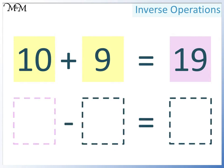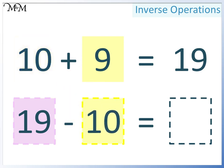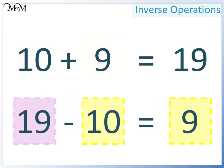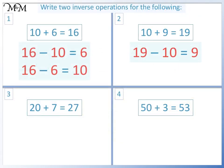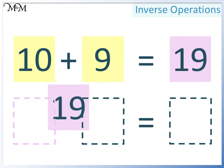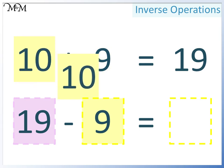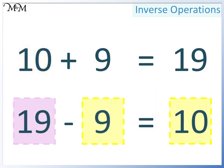Question 2: 10 plus 9 equals 19. The largest number must be at the start of our subtraction. In the next space, we can have either 10 or 9. This time, we'll subtract 10. And in the final space, we'll have 9. 19 take away 10 equals 9. For the second calculation, we must still begin with the largest number. Again, this is 19. This time, we'll subtract 9. And this equals 10. 19 take away 9 equals 10.